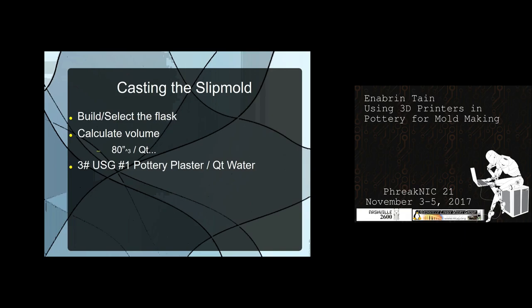Now we're going to talk about the actual casting — the plaster. What makes a good flask? The flask is what holds the plaster around the positive. I've made flasks out of wood, and also, as you see here, out of a gallon bowl from Kroger — I just cut the top off of it.